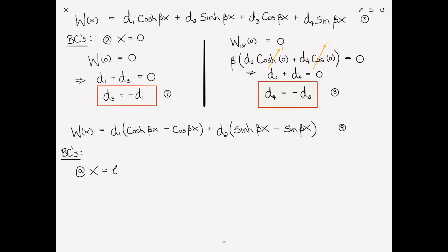So the first boundary condition at x = L is that the displacement W(L) = 0. Substitute that into equation 9, and we end up that d1 times (cosh βL - cosine βL) plus d2(sinh βL - sin βL) = 0.